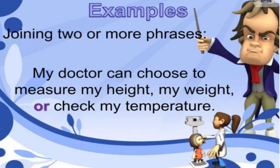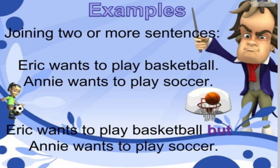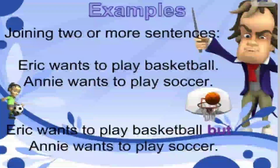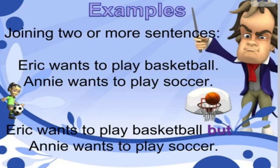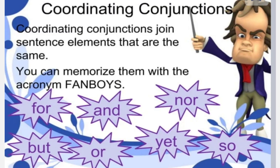Joining two or more sentences: 'Eric wants to play basketball. Amy wants to play soccer.' Both are individual sentences. But: 'Eric wants to play basketball but Amy wants to play soccer.' We use 'but' for adding contrasting information — information that is different. There are three types of conjunctions.